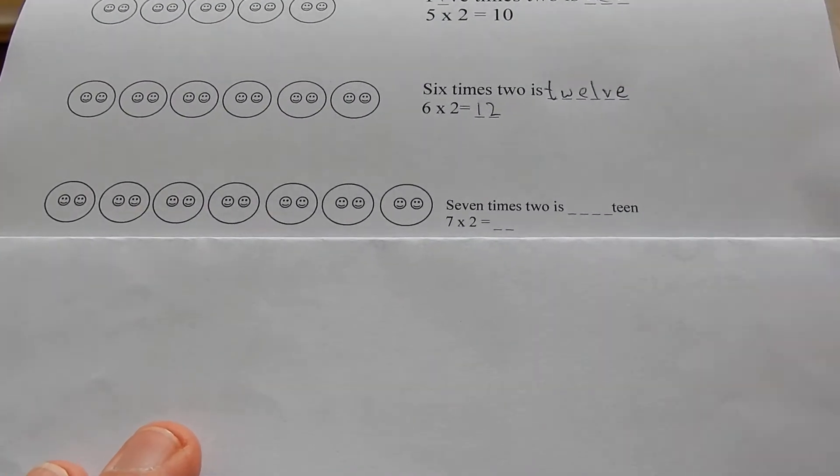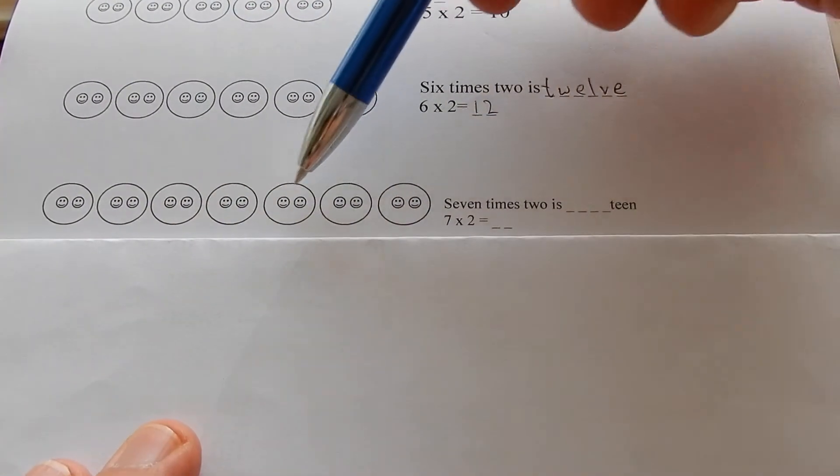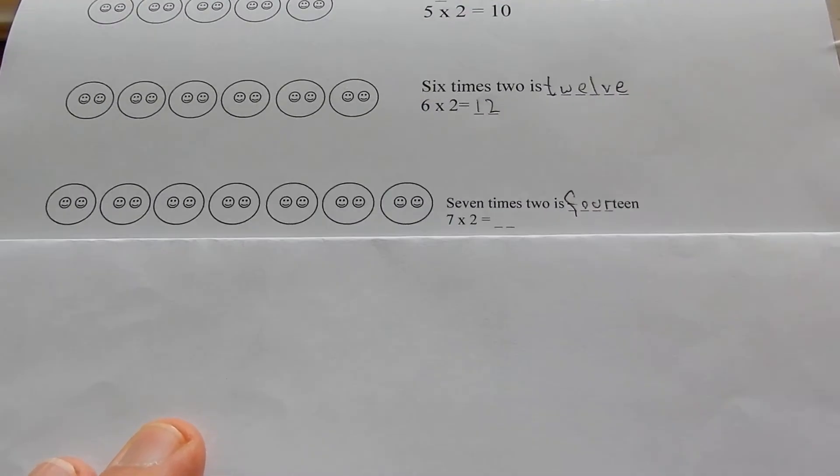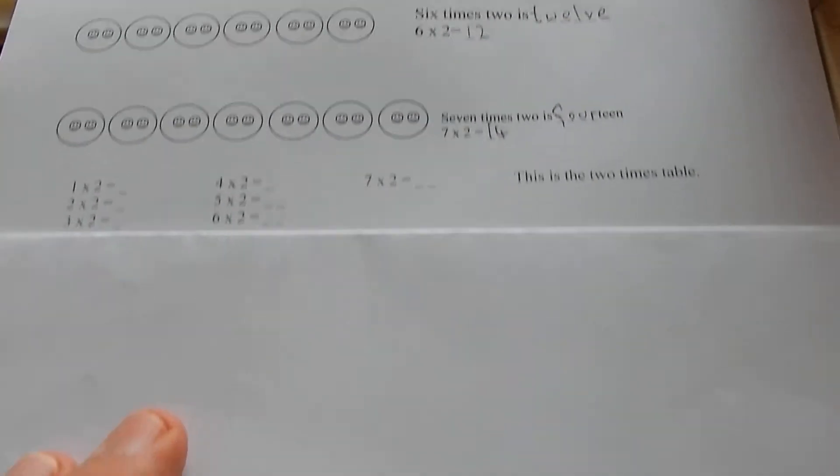Seven times two is two, four, six, eight, ten, twelve, fourteen. Fourteen. Cool.